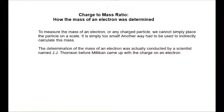Welcome back to another lesson in Grade 12 physics. Today we're going to combine a whole bunch of stuff that we know about electric fields and magnetic fields, put them all together, and use this information to determine the mass of an electron — this is called the charge-to-mass ratio. The subtitle of this lesson is: how the mass of the electron was determined.